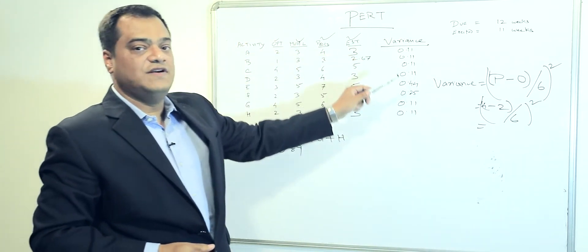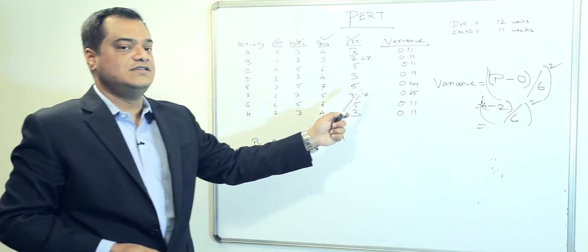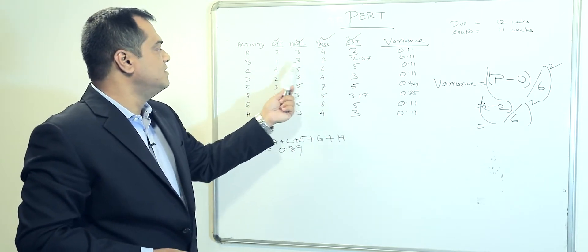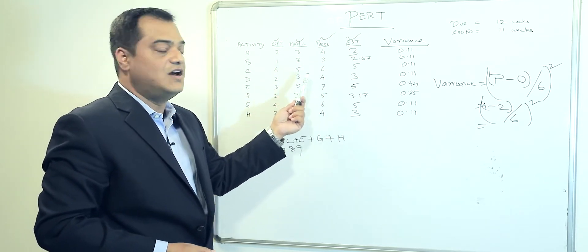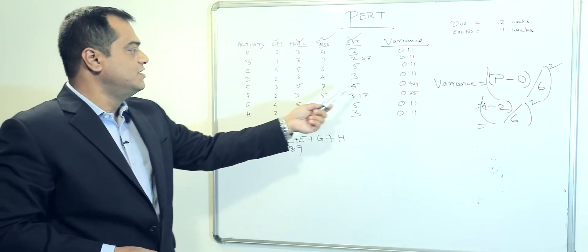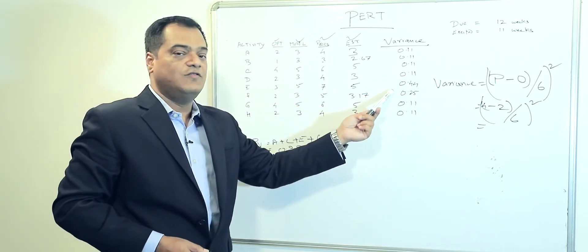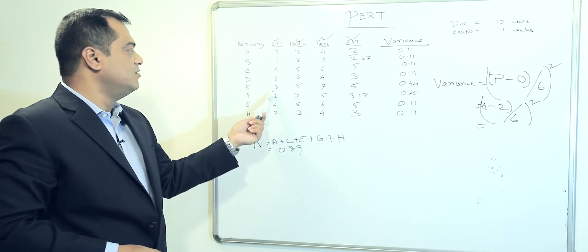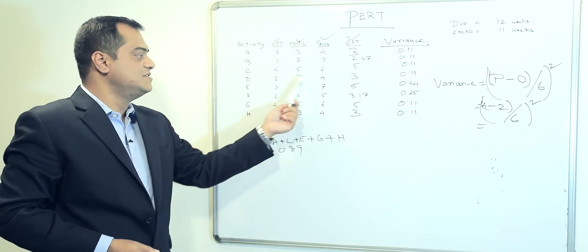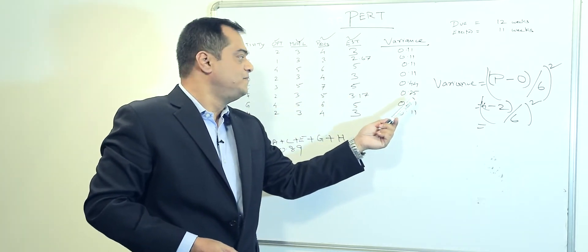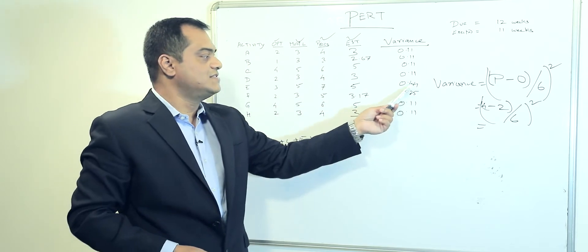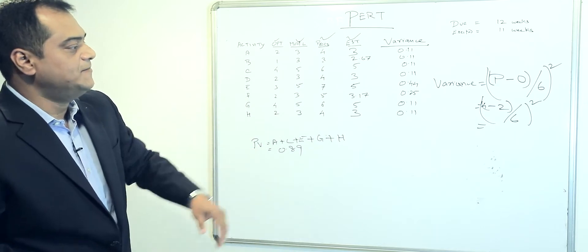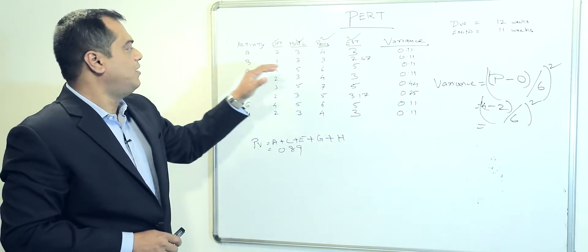We have plotted all the variances. In most cases the variance is quite similar because the difference between optimistic and pessimistic is nearly the same. However, in one particular case we have a variance of 0.44, because the pessimistic number is seven and optimistic is three — a bigger difference means bigger variance. The next largest variance is 0.25.